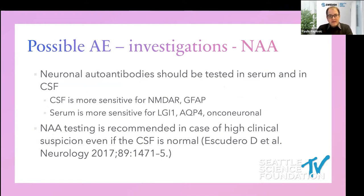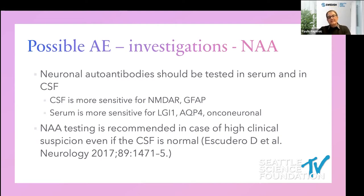Neuronal autoimmune antibodies should be tested in both serum and CSF. I cannot emphasize enough how important it is to test this as a panel — you really don't want to send a single neuronal autoimmune antibody test ever because clinical presentations are so overlapping. CSF is more sensitive for some types such as NMDA and GFAP, but serum can be more sensitive for others such as LGI1, AQP4, or onconeural antibodies. Both CSF and serum should be sent, even if CSF findings are otherwise normal.